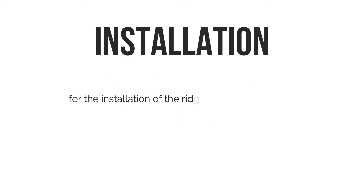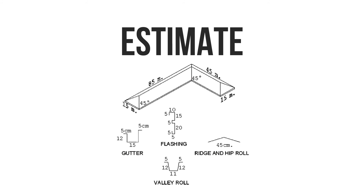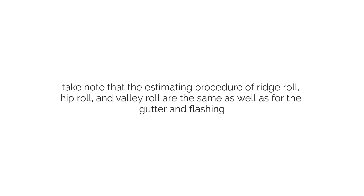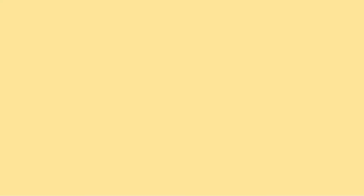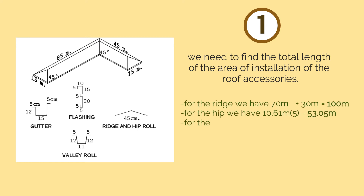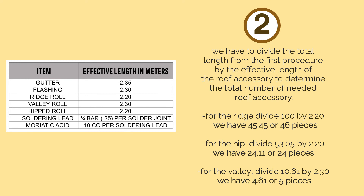For the installation of ridge, hip, and valley rolls, the ridge and hip rolls shall lap at least 25 centimeters over roof sheets. Using the sample roofing figure on screen, the estimating procedure for ridge roll, hip roll, valley roll, gutter, and flashing are all the same. First procedure: find the total length of the area of installation. For the ridge, we have 70 plus 30 meters for a total of 100 meters. For the hip, 10.61 meters multiplied by 5 gives 53.05 meters. For the valley, we have 10.61 meters. Second procedure: divide the total length by the effective length of the roof accessory to determine the total number needed.